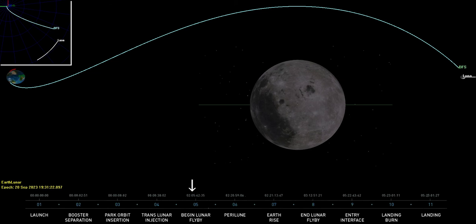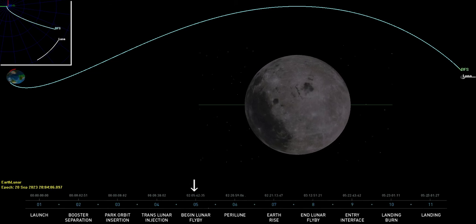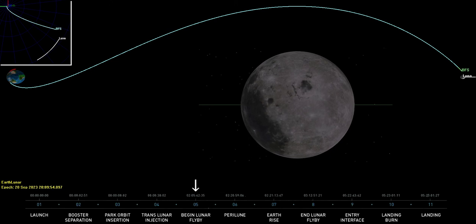The vehicle then coasts for two days without any major burns beyond minor course corrections of a few meters per second to account for errors in translunar injection.